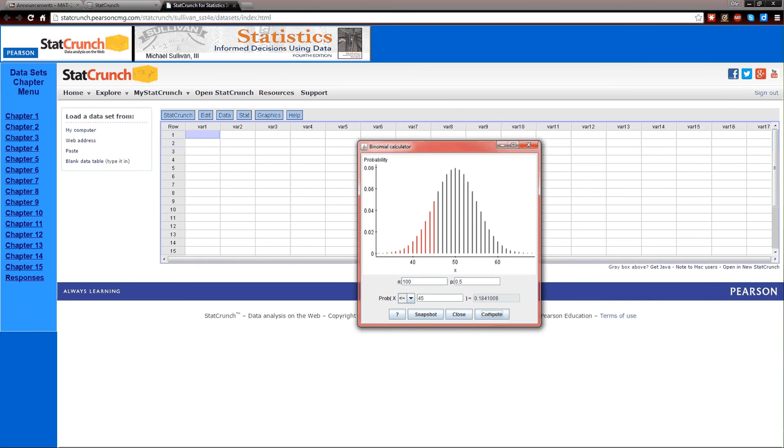All the vertical lines are part of the probability mass function for the binomial. For, in this case, the binomial 100, 0.5. The red colored bars are those that are less than or equal to 45. So adding up all the heights of those red bars gives us 0.1841008.